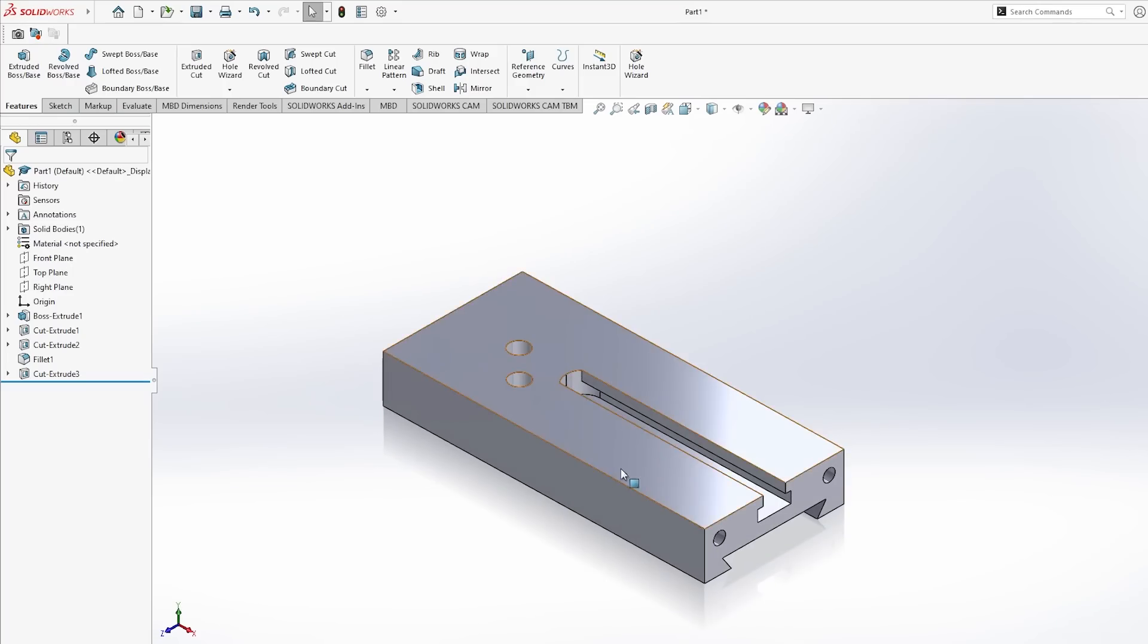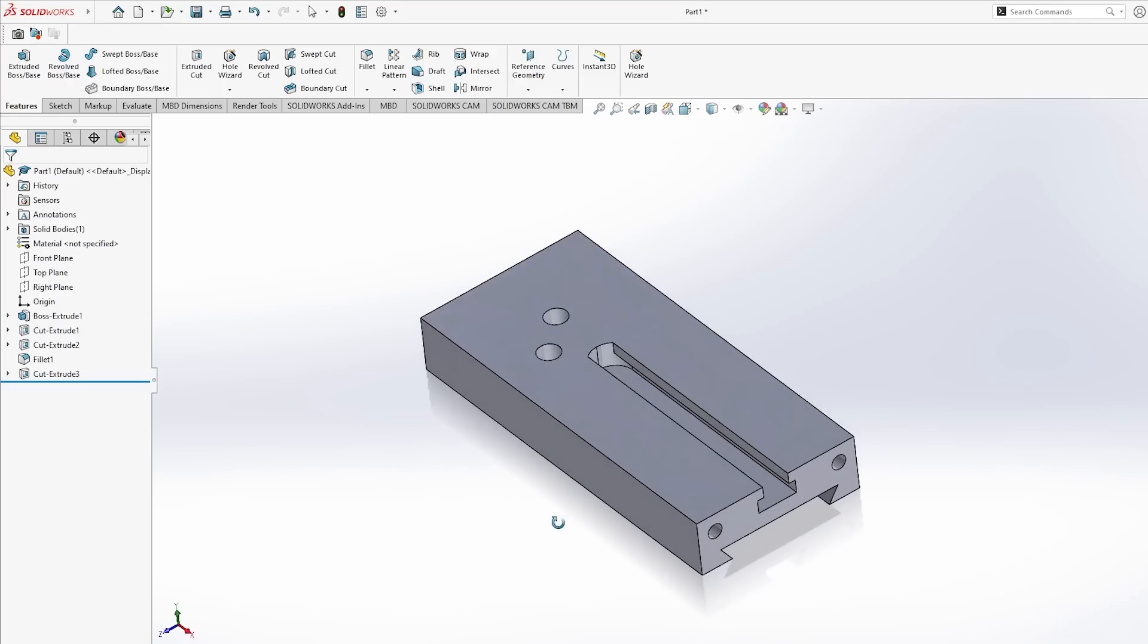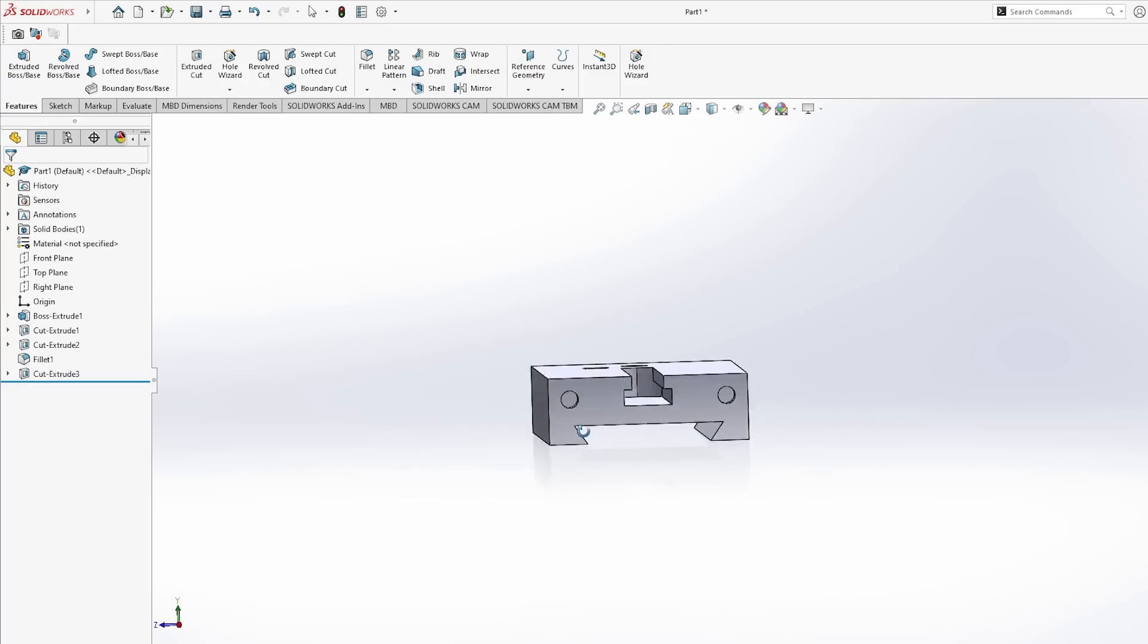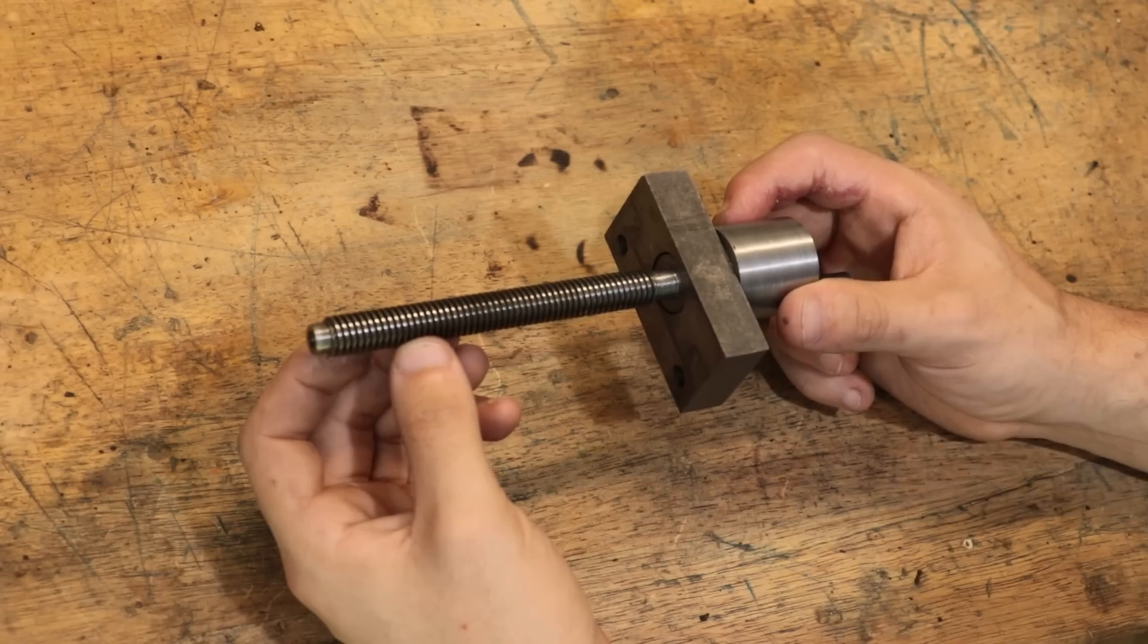So I'm currently redesigning it, and a few other parts that make up the carriage. And in order to do that, I will need a way to cut some trapezoidal threads, which is what the lead screws use.